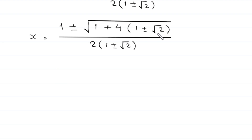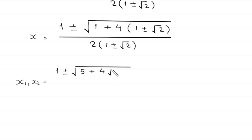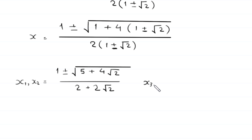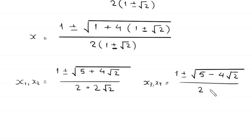When this value is 1 plus root 2, we get two values of x: x1 and x2 equals 1 plus or minus the square root of (5 plus 4 root 2), divided by 2 plus 2 root 2. When this value is 1 minus root 2, we get the other two solutions: x3 and x4 equals 1 plus or minus the square root of (5 minus 4 root 2), divided by 2 minus 2 root 2. So these are the four solutions of this equation.